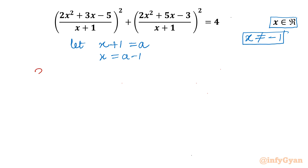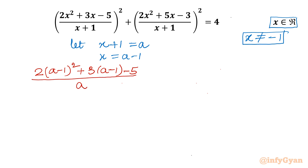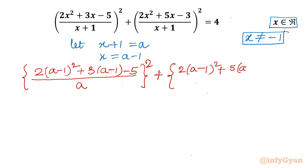Let us put the value of x. The first numerator becomes: 2(a-1)² + 3(a-1) - 5, over a², plus the second numerator: 2(a-1)² + 5(a-1) - 3, over a², equal to 4.